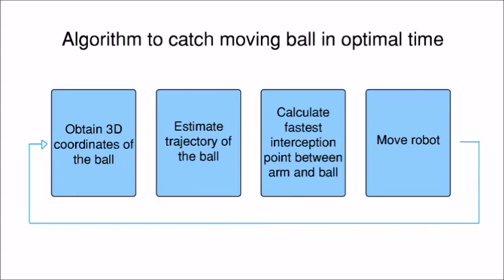First, we need to obtain the location in space of the ball. Next, we should estimate the trajectory of the ball and calculate the fastest interception point between the arm and the ball. Finally, we should get the robot moving there and then iterate again.